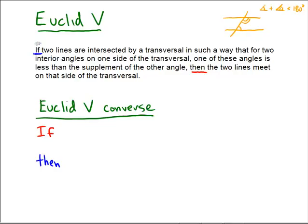It says if two lines are intersected by a transversal in such a way that for two interior angles on one side of the transversal, one of these angles is less than the supplement of the other angle, then the two lines meet on that side of the transversal.